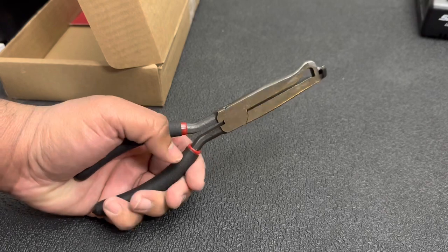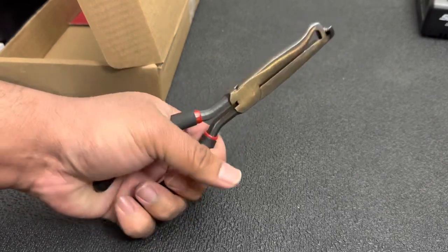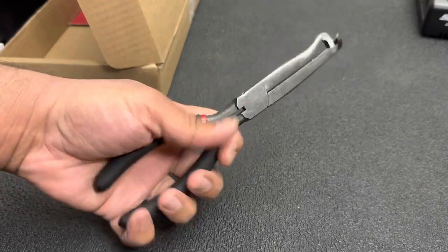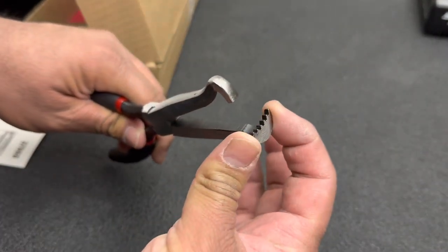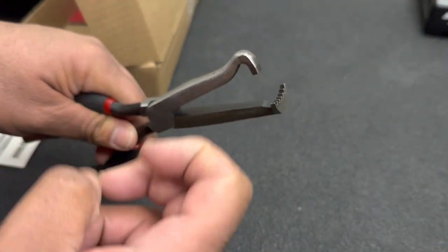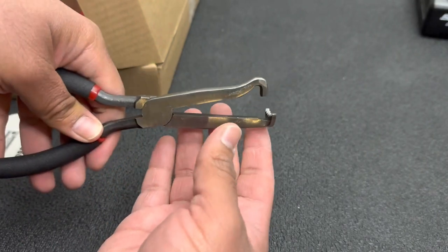Alright guys, so this is the plier set here. You've got some nice textured grips on the handle. The pliers feel pretty firm and the way that these basically work, you got the wider tip at the bottom and this hook up on the top and you basically grab the connector.